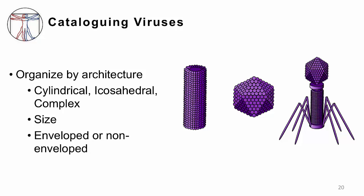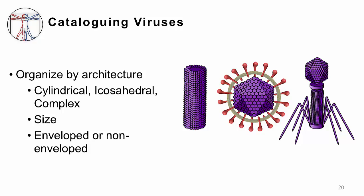In addition to organizing by nucleic acid, viruses can also be organized by their architecture — shape and size. The shapes are of three main types: cylindrical, icosahedral, and complex. Viruses can also be organized by whether they are enveloped or non-enveloped.